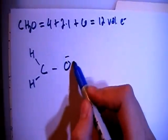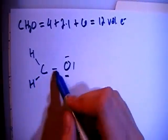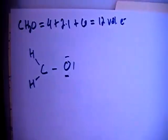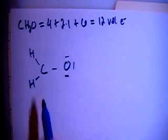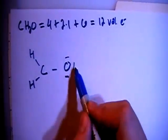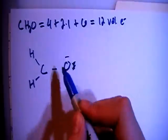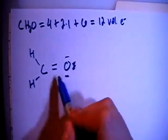Now, we can fill in the octet for the oxygen. So 2, 4, 6, 8, 10, 12, that's our 12 electrons, but if you notice, the carbon does not have its full octet. So what we're going to do is move one of these non-bonding pairs, give the oxygen a double bond to the carbon.